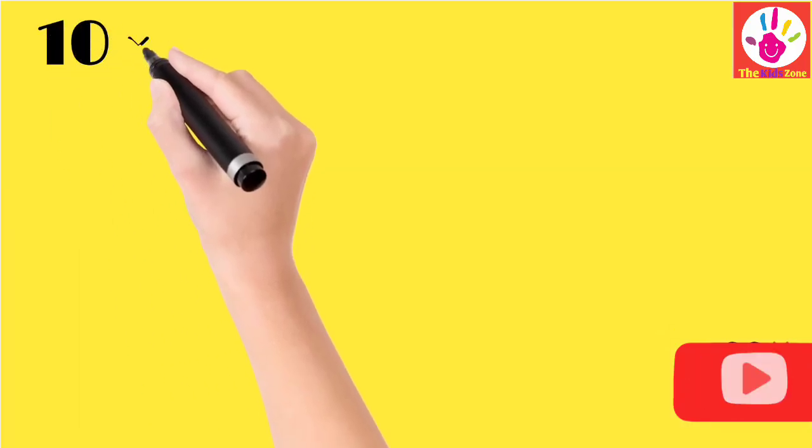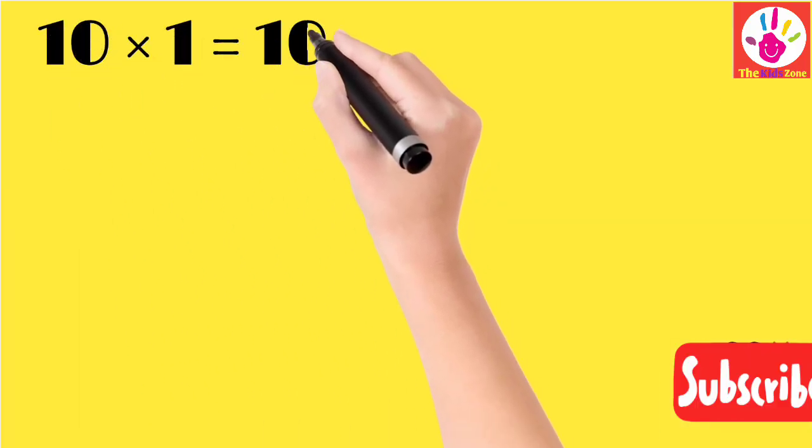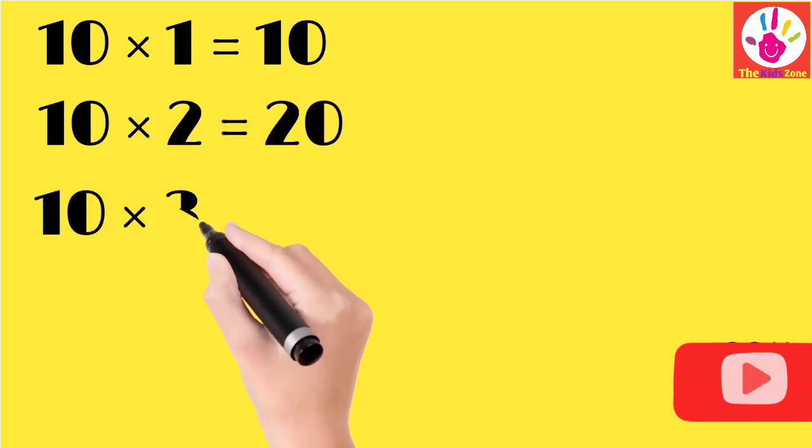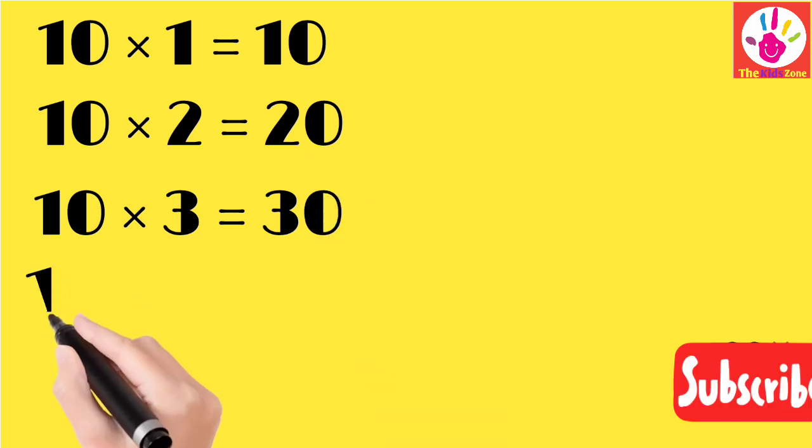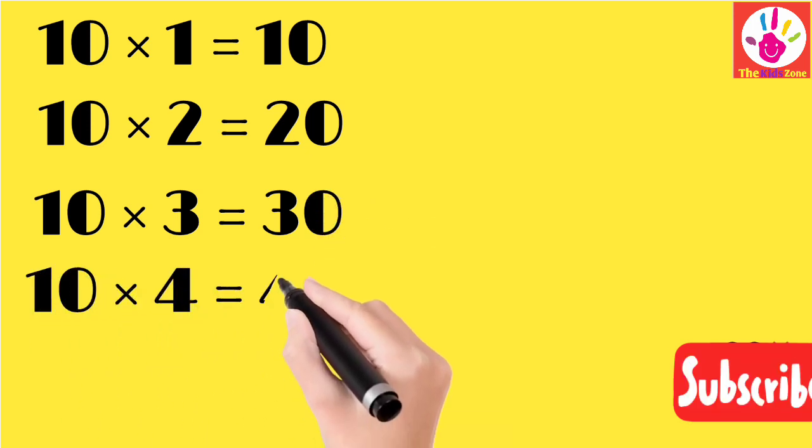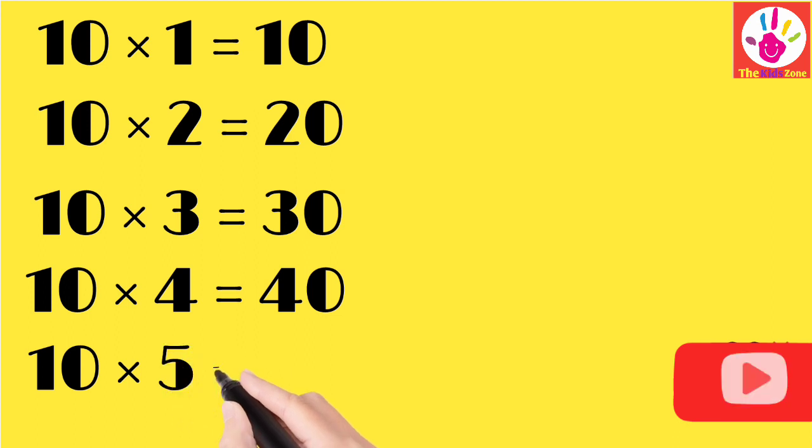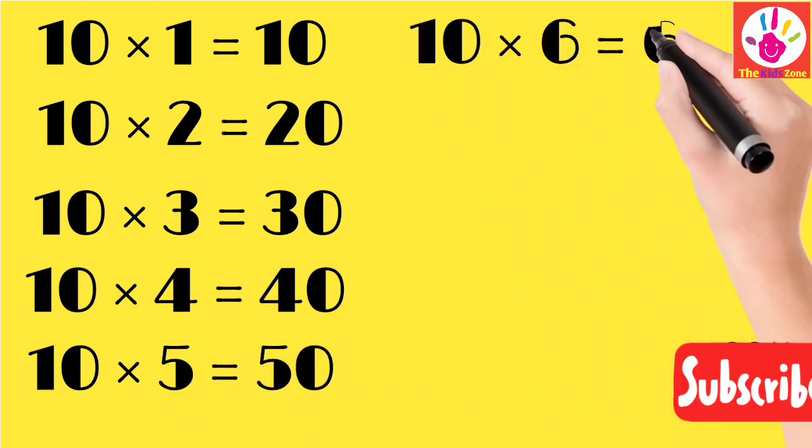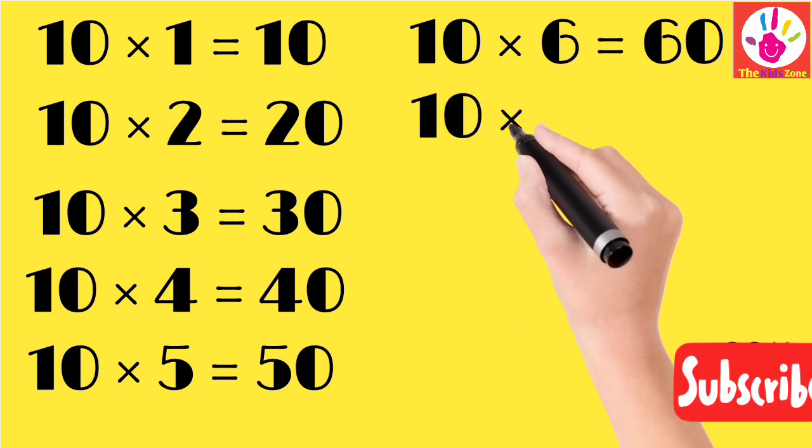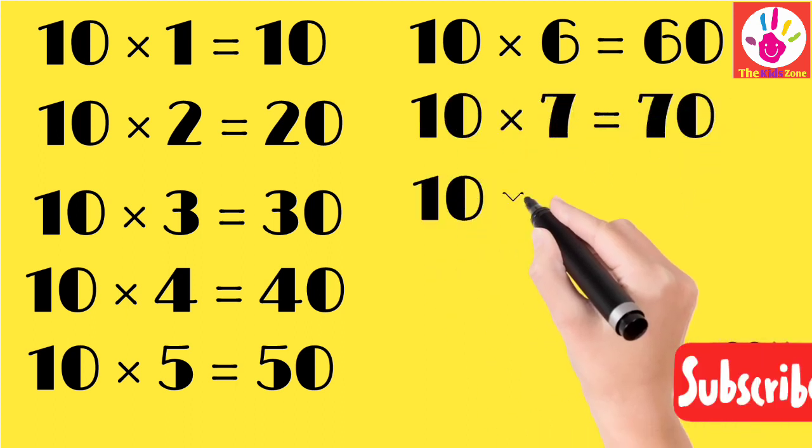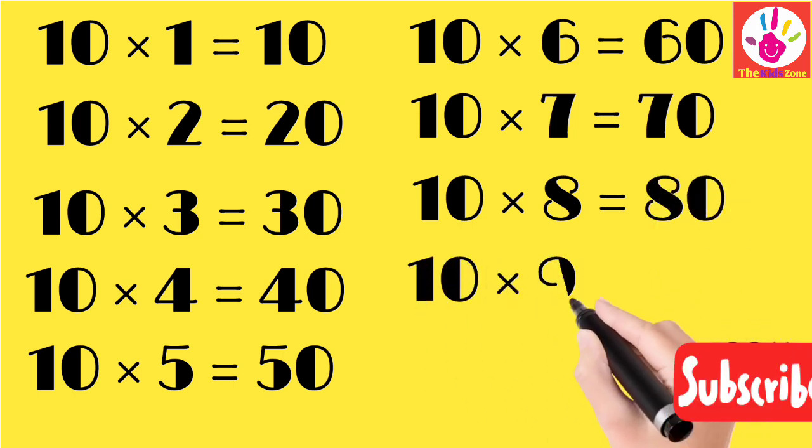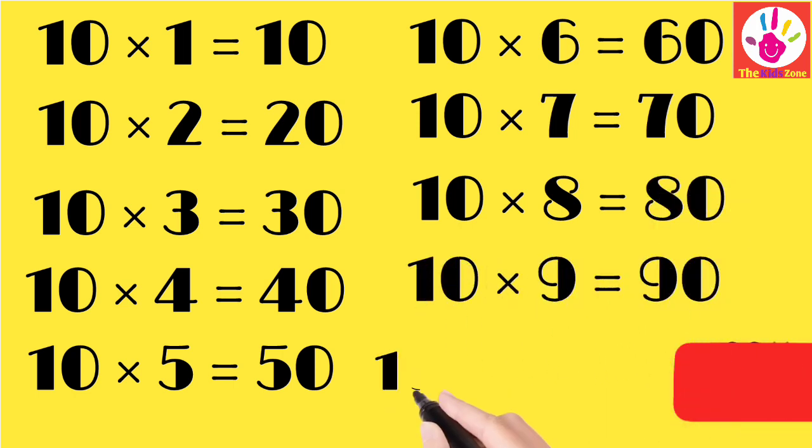Table 10: 10 ones are 10, 10 twos are 20, 10 threes are 30, 10 fours are 40, 10 fives are 50, 10 sixes are 60, 10 sevens are 70, 10 eights are 80, 10 nines are 90, and 10 tens are 100.